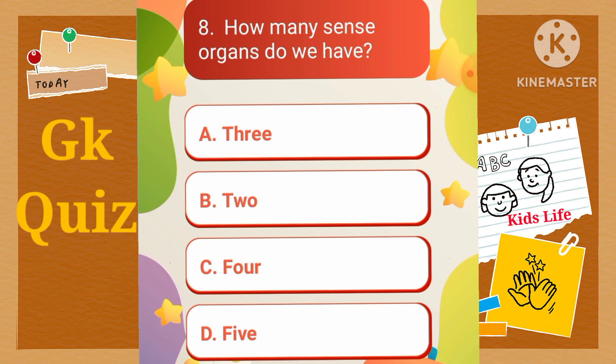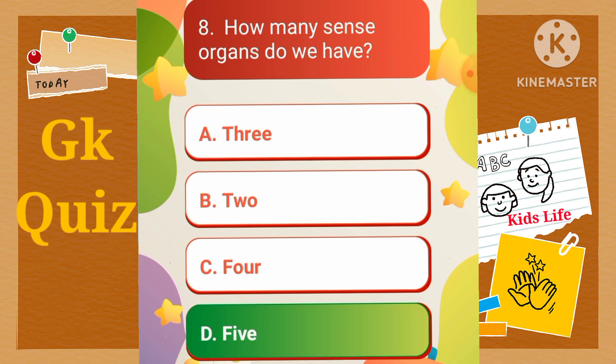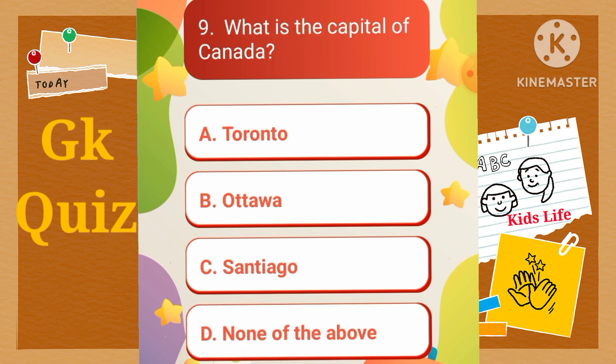How many sense organs do we have? A) Three, B) Two, C) Four, D) Five. What is the capital of Canada? A) Toronto, B) Ottawa, C) Santiago, D) None of the above.